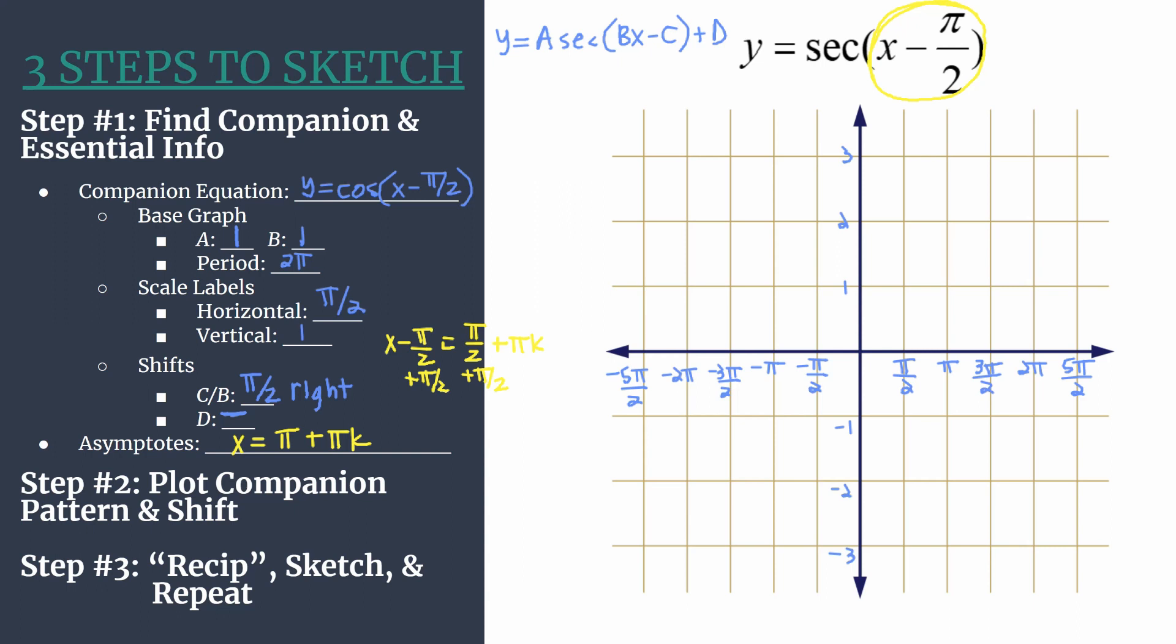Now we've got all of the analysis and organization done. We're ready for step two. We're going to plot our companion pattern and then take care of the shift. So remember that our companion pattern for a cosine graph starts with a maximum on the y axis. At the first horizontal tick mark to the right, there's an x-intercept or zero. Then we'll go to the minimum at the second horizontal tick mark. Then another x-intercept at the third horizontal tick mark. So that's going to create our pattern.